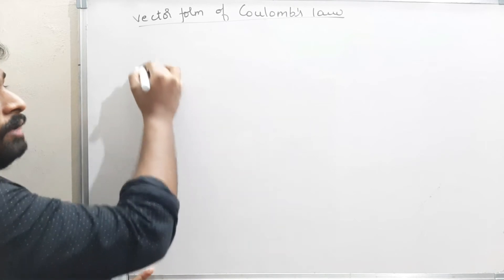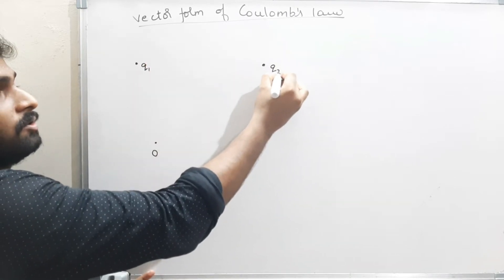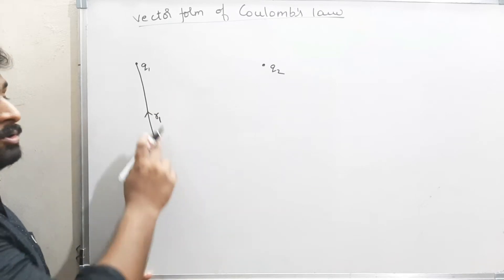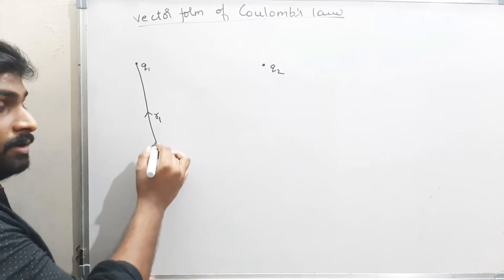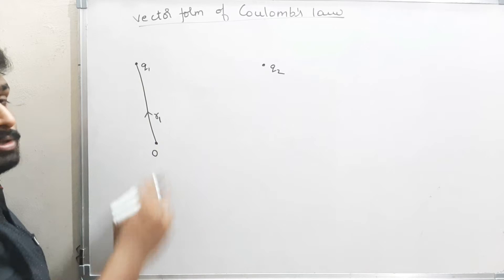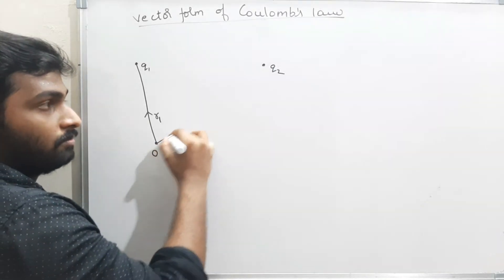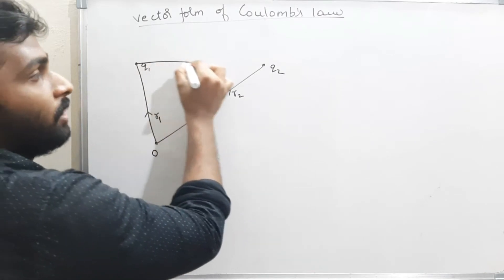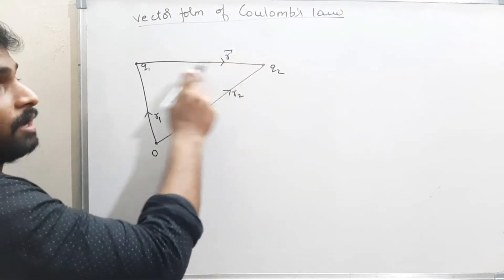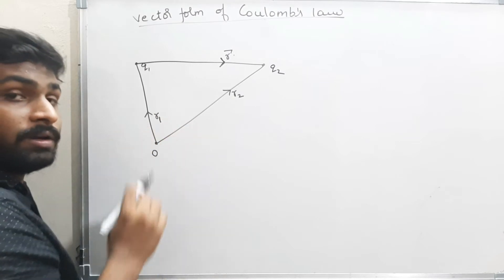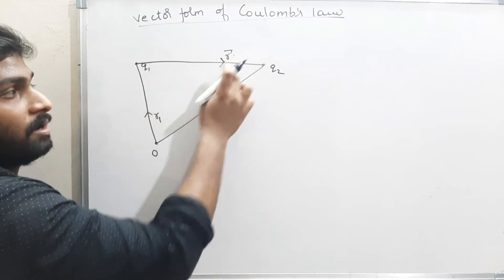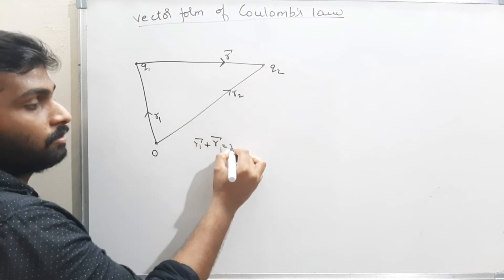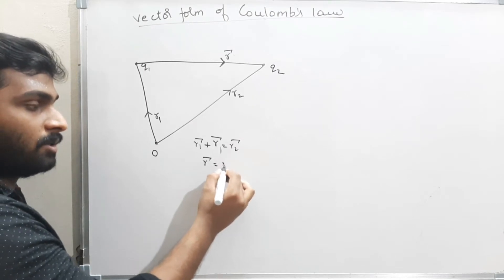Consider an origin. Charge Q1 is at position vector r̄₁ (from origin to Q1) and charge Q2 is at position vector r̄₂ (from origin to Q2). Using vector addition, r̄₁ + r̄ = r̄₂, so r̄ = r̄₂ − r̄₁. This vector r̄ is called r̄₂₁ — the position vector of body 2 with respect to body 1.